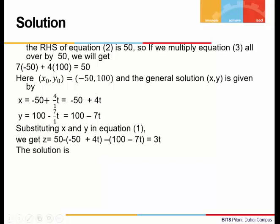We substitute these values of x and y in equation 1. Equation 1 was z is equal to 50 minus x minus y. So we put the value of x and value of y. This gives us z is equal to 3t. So the general solution is x is minus 50 plus 4t, y is 100 minus 7t, and z is equal to 3t, where t can take the value 0, plus minus 1, plus minus 2, plus minus 3.